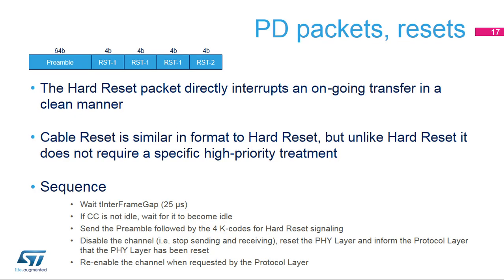The Type-C connector does not support a dedicated reset signal. Consequently, reset conditions are signaled using specific PD packets transferred over the CC line. Two types of reset are defined: hard reset, which aborts ongoing transfers, and cable reset, which does not require high-priority treatment.